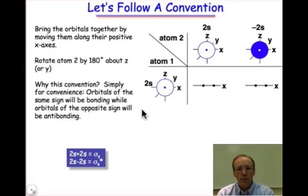So let's do that and let's define our convention. We're going to bring the orbitals together along their positive x-axis. In order to do that, you can see that the positive x-axis for atom 2 is pointing in this direction, and so there are the two plus and minus 2s combinations, and we can also see that the positive x-axis also points off to the right for atom 1.